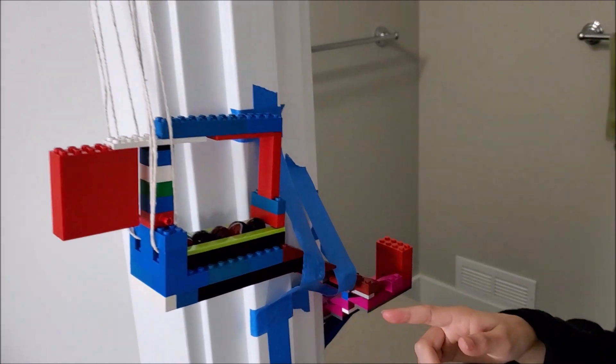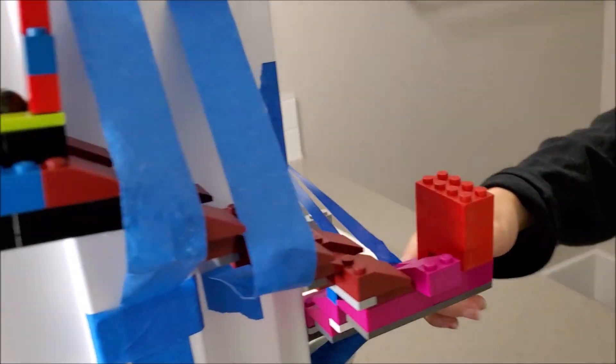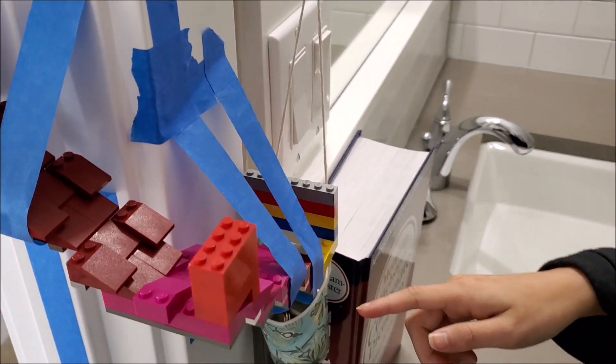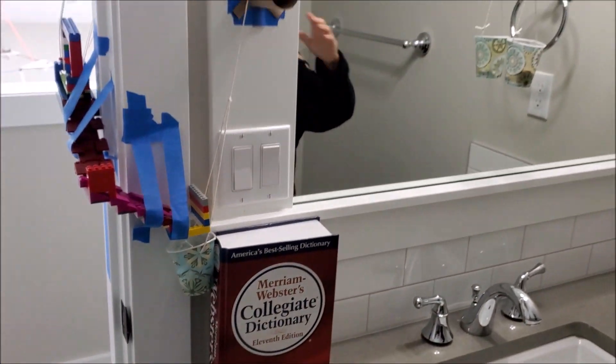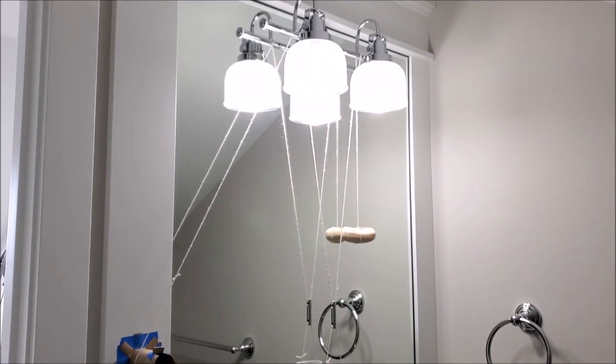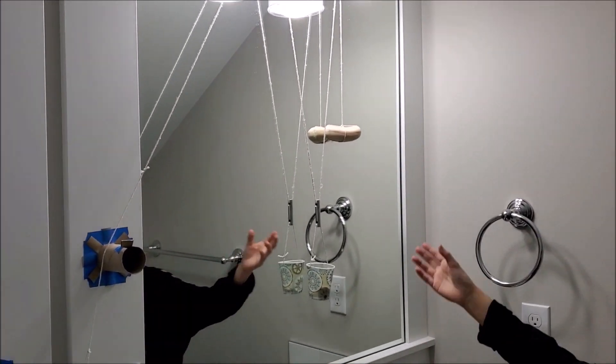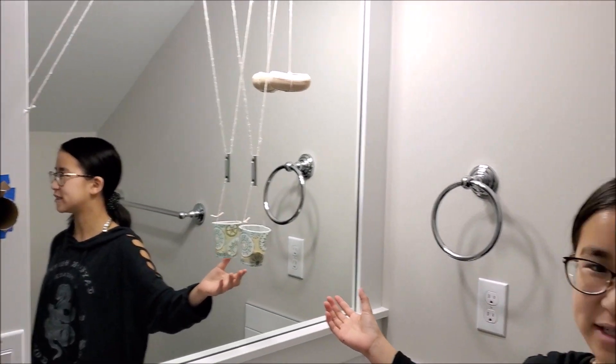The marbles will go down this track, change direction, and fall into this weighted cup. We've rigged the cup in an inverted pulley system so that when this cup lowers, so does the bar of soap, and it falls right into my head.